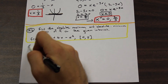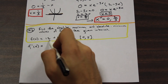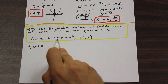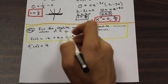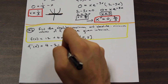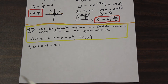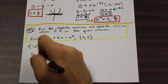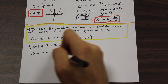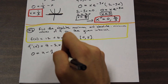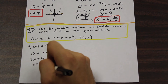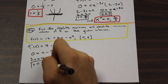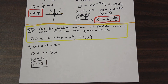Let's take the derivative. The derivative of 12 is 0, the derivative of 4x is 4, and the derivative of x squared is 2x. We equal the derivative to zero and solve for x, and we get that x equals 2.